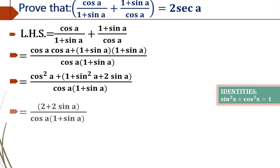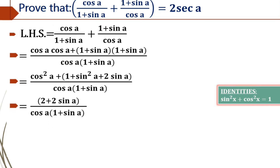We are not going to touch the denominator. Now, cos squared A plus sin squared A will give 1, and 1 plus 1 will give 2. That is, 2 plus 2 sin A, whole divided by cos A into 1 plus sin A.